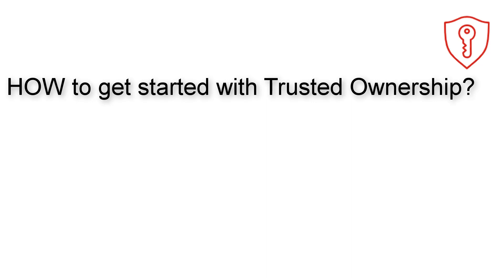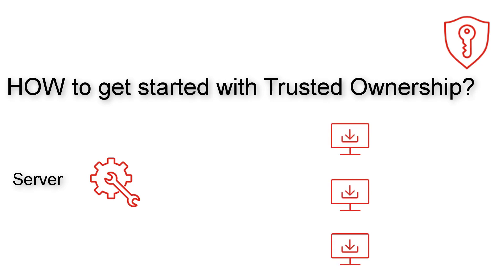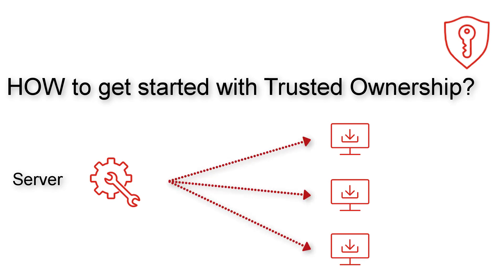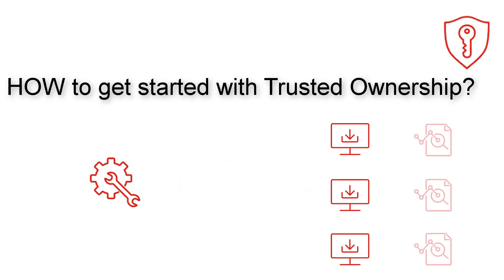Trusted ownership comes ready to use out of the box. The architecture is simple: you need a server to install the AC console so you can edit the configuration, and the computers you want to manage — these endpoints will need the AC agent installing on them. They will then be ready for the configuration to be pushed out to them. Once the agent and configuration are on the endpoints, they become your managed machines.